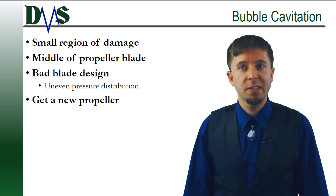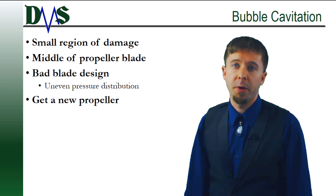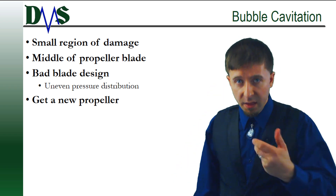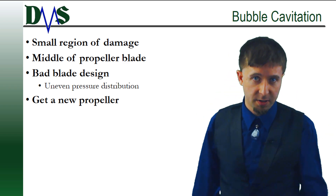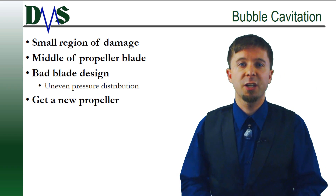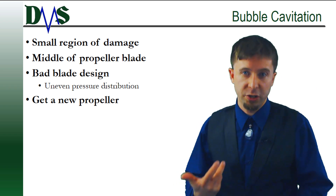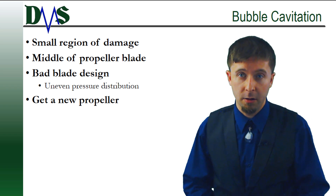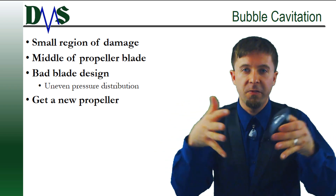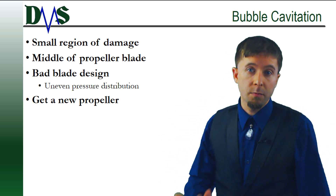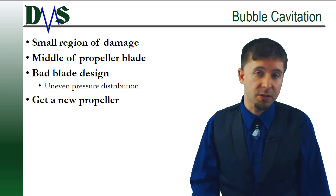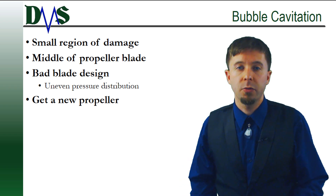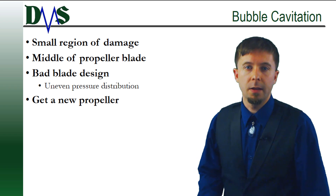Bubble cavitation shows up as some small region of damage in the middle of the propeller blade. The key here is it's a small region that's clearly isolated from the rest of the blade. This occurs due to uneven pressure distributions along the blade — somehow some section of the propeller created an excessive pressure loss, resulting in cavitation. This might occur due to interactions with the vessel hull, which also creates an uneven flow of water that enters the propeller. Some radial sections along the propeller have a faster inflow than others, and with those uneven flows, one section of the propeller may generate greater suction than intended, resulting in bubble cavitation.